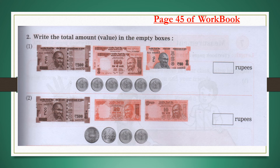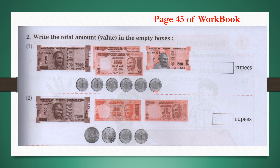Children, this is page 45 of your workbook. Write the total amount or value in the empty boxes. In the first question, there is a 500 rupees note, two 100 rupees notes, one 50 rupees note, and six 1 rupee coins. Adding: 500 plus 100 is 600; plus 100 is 700; plus 50 is 750; then counting six 1 rupee coins: 751, 752, 753, 754, 755, 756. The total value is 756 rupees.